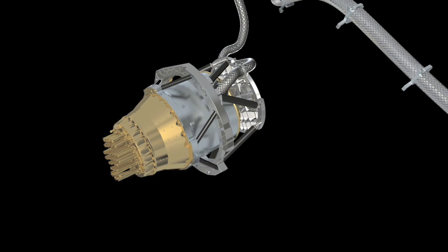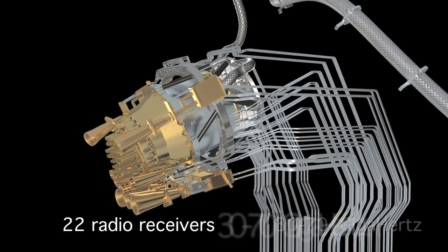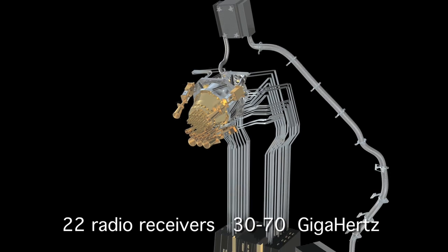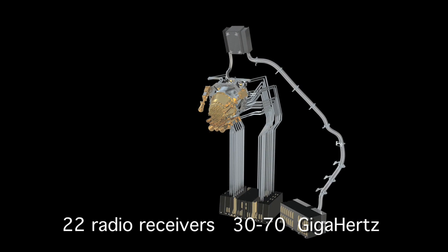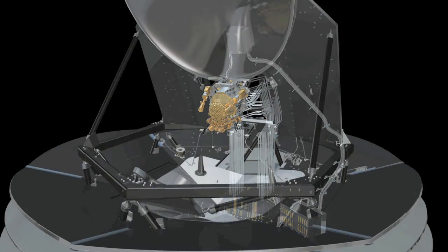The low-frequency instrument consists of 22 radio receivers that are tuned to three frequency channels between 30 and 70 gigahertz. They work like transistor radios, amplifying the signal collected by the telescope and converting it to a voltage.